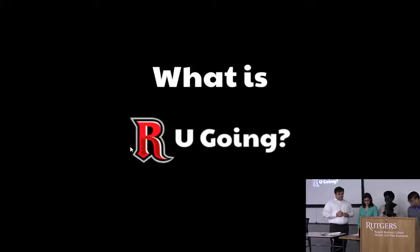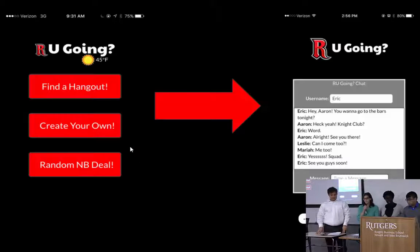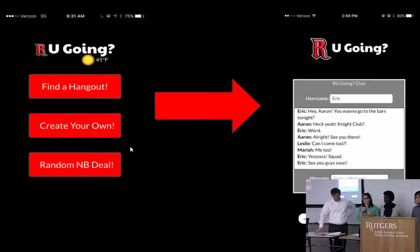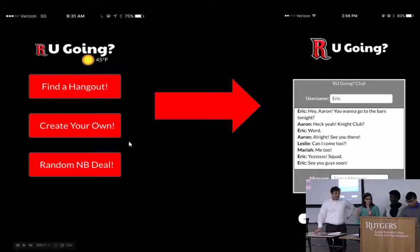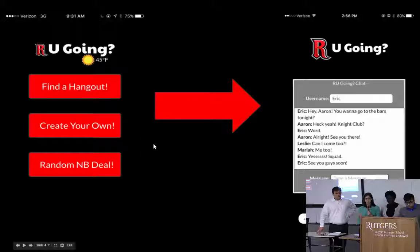What is Are You Going? Are You Going is a way for Rutgers students to meet up with other Rutgers students based on common interests. So students can look for a pre-existing event or they can make their own. They can search by location of the event and what they want to do. Similarly, they can also enter those queries when they want to make an event. And then when they get to that specific event, they can go into the chat room and talk about specifics of it.